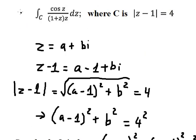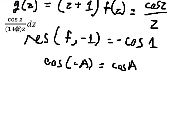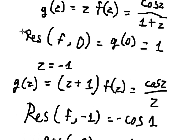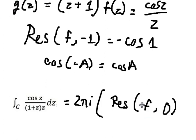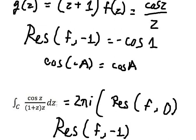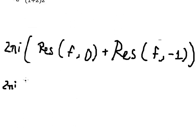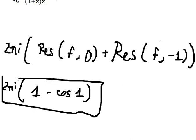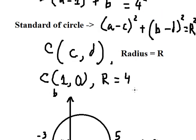After we have everything, we can find the final answer using the residue theorem: two pi i times the sum of all residues. So we have two pi i times (one plus negative cosine one), and that is the final answer. Here is the full answer to the question.